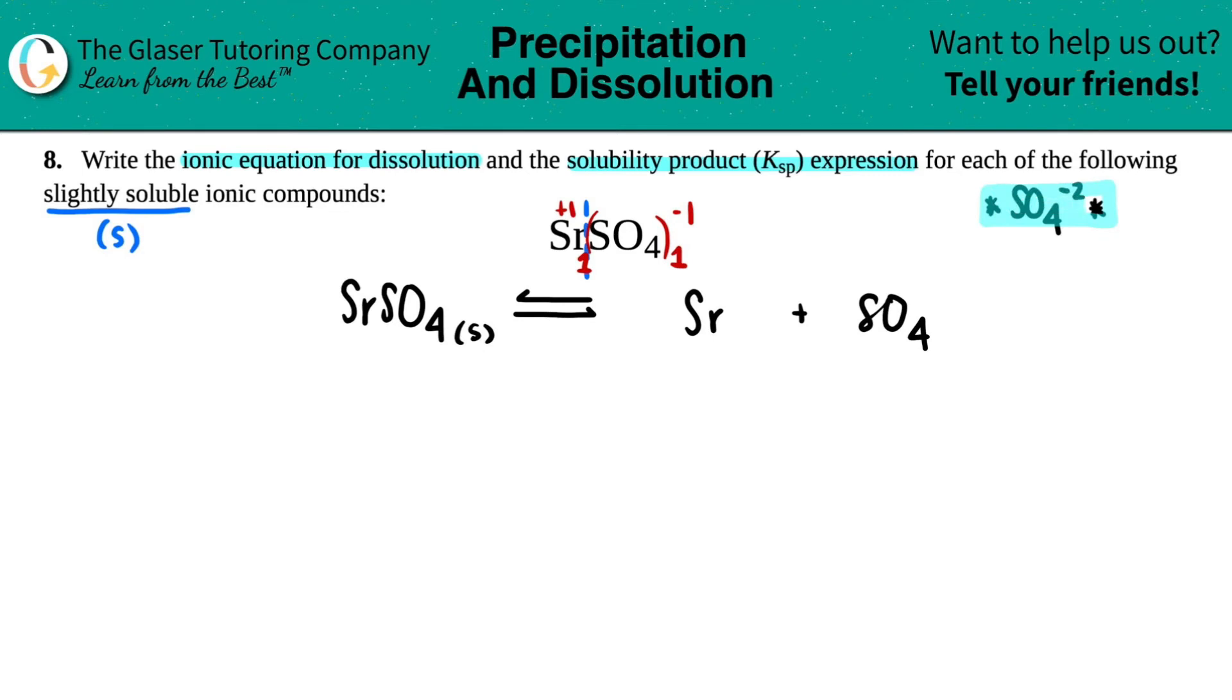So since we have a negative one here, technically, this has to be multiplied by two. This ionic compound was simplified. But whatever you do to one side, you got to do to the other side. And that's how we get the correct charges. So this would be Sr²⁺ and SO4²⁻. Since I now have charges, these are going to be aqueous.